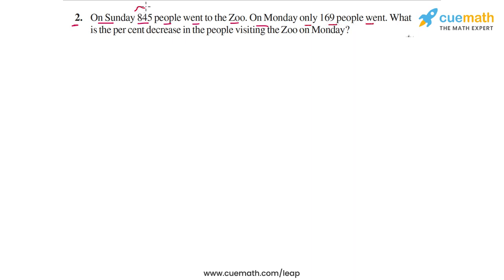So on Sunday, the total number of people who went to the zoo was 845. On Monday, this decreased to 169. Then the question says, what is the percent decrease in the people visiting the zoo on Monday? So from Sunday to Monday, we have to find the percent decrease in the number of visitors to the zoo.